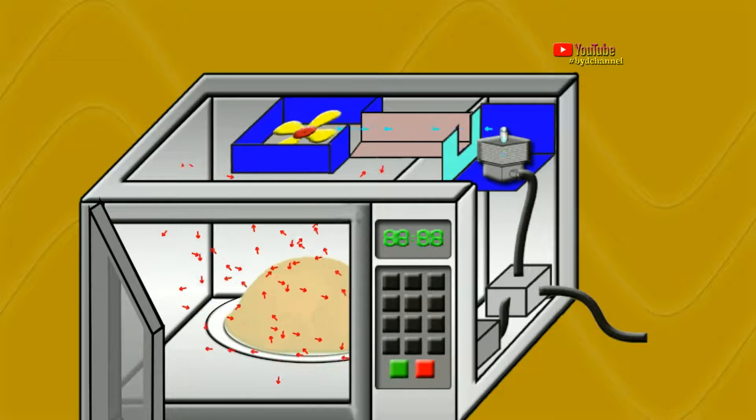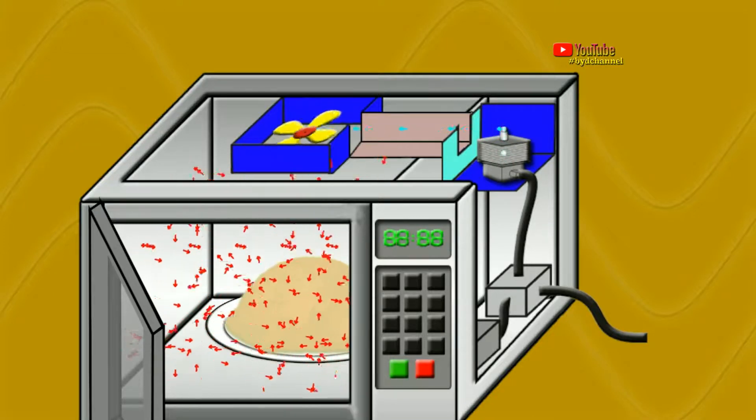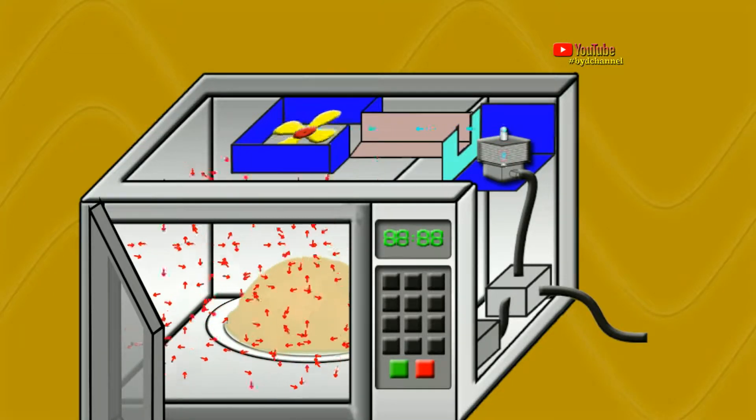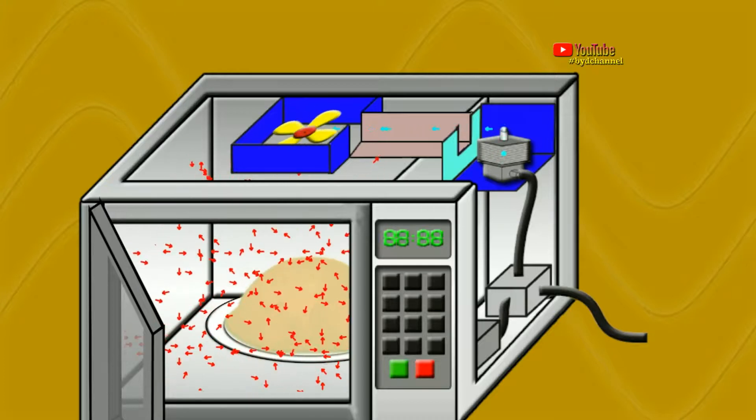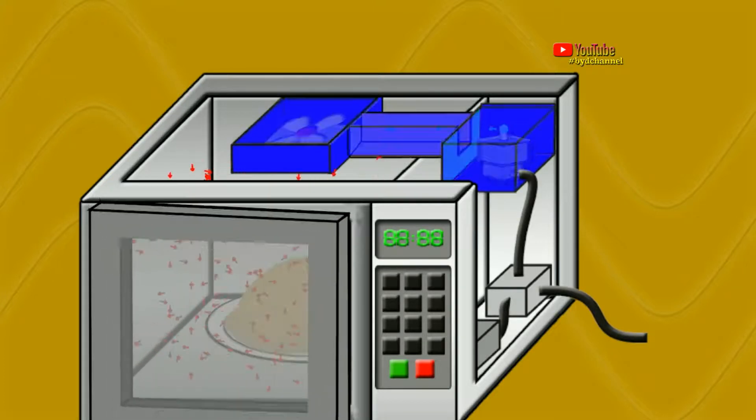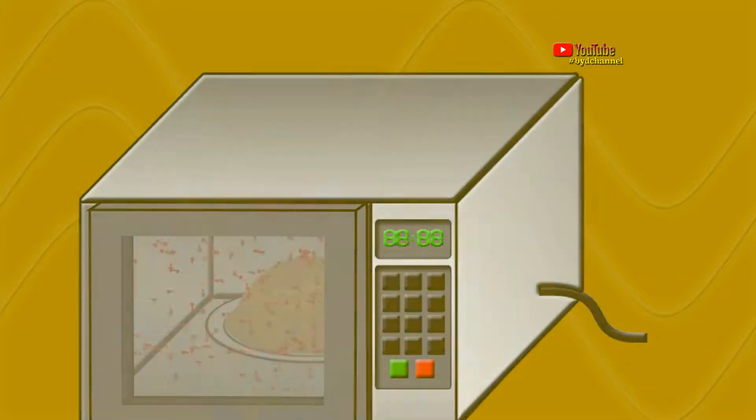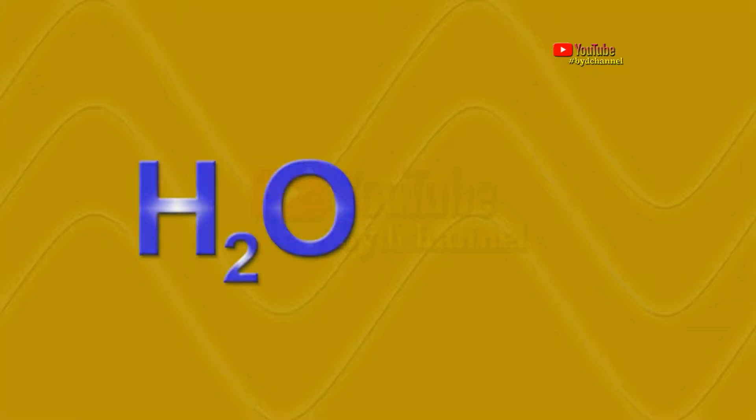These microwaves are then reflected by the walls in the oven and absorbed by food molecules. Microwaves can interact with compounds that have dipole moments such as water.